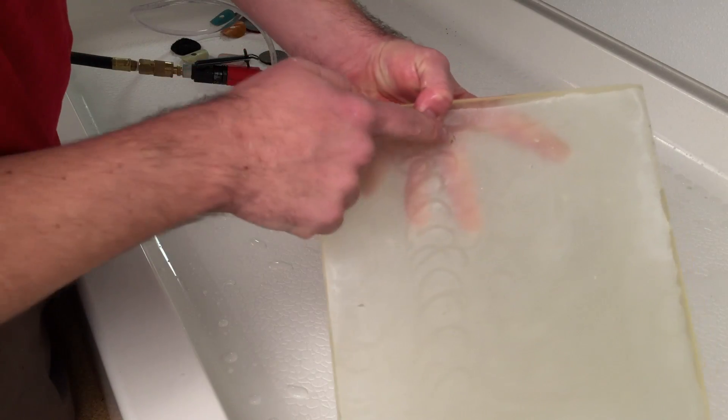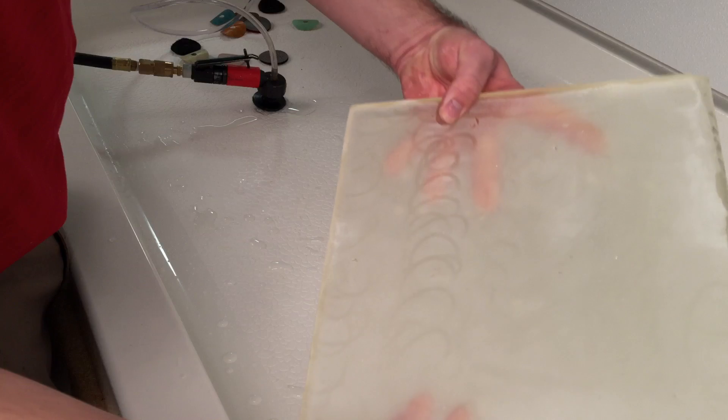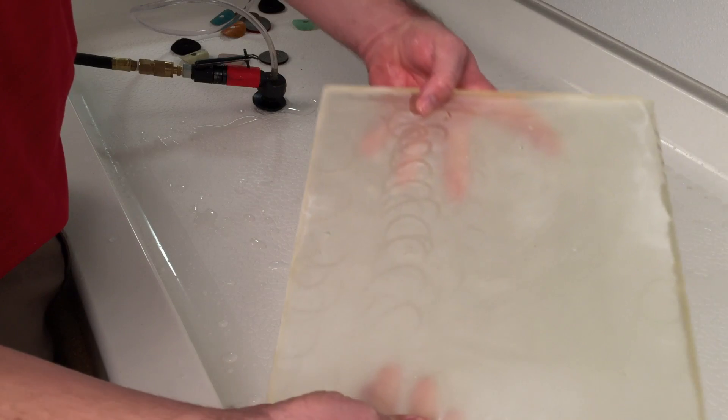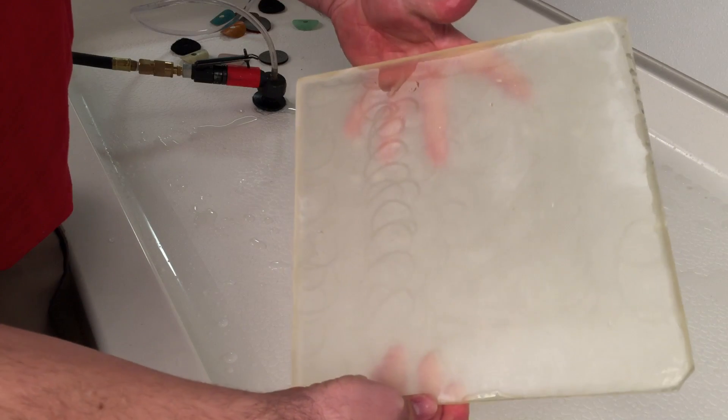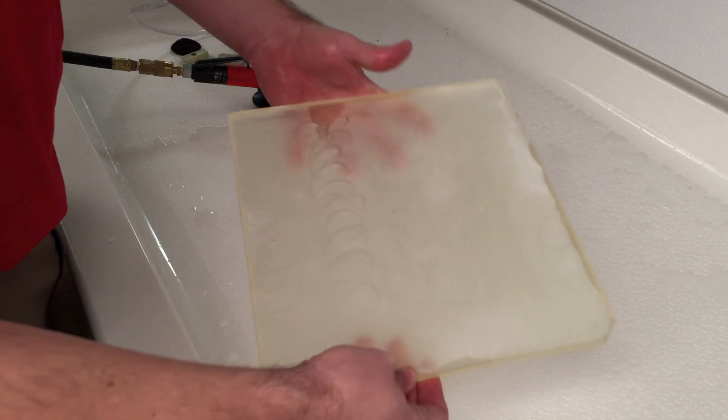You can see I've got some deeper divots still that I can try and get out. I may go a little bit further on my 60 grit, and then just work those and leave those in there for the next slumping.